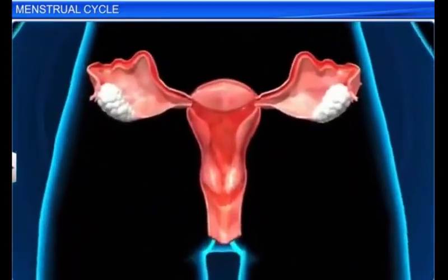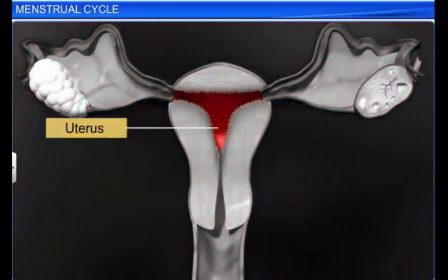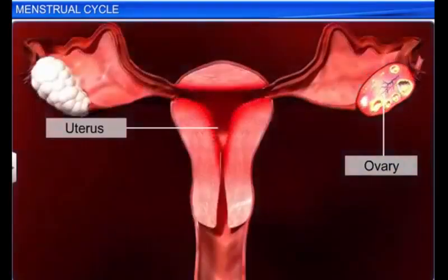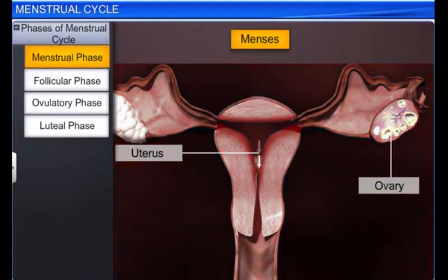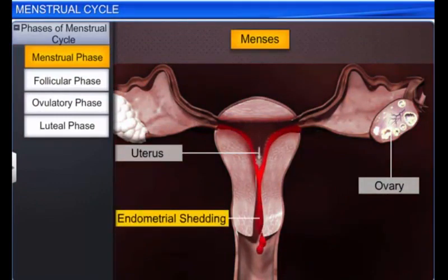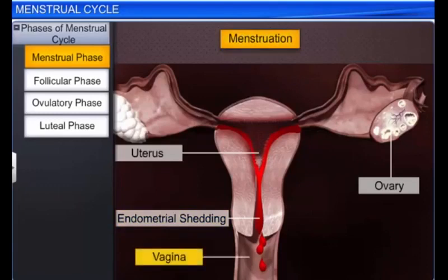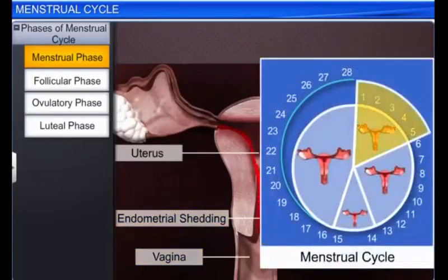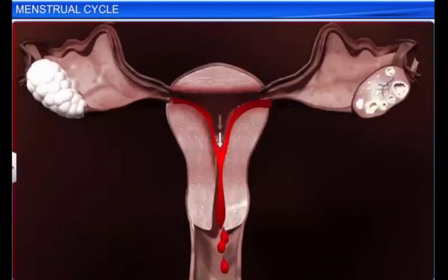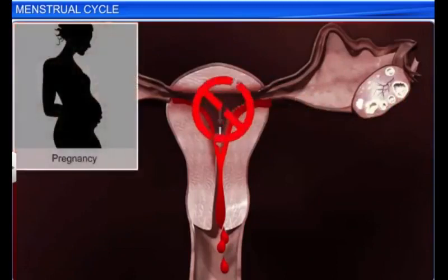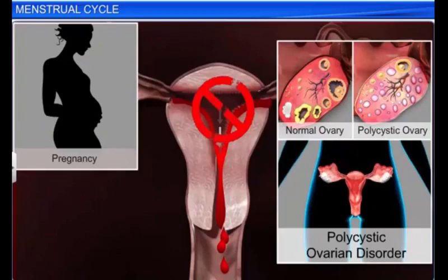Each phase of the menstrual cycle is marked by simultaneous changes in the uterus, ovary, and hormone secretion. During the menstrual phase, the endometrial lining and its blood vessels break down and mix with blood, mucus, and other cell debris to form menses, discharged through the vagina as menstrual flow lasting three to five days. The absence of menstruation may indicate pregnancy or ovarian disorders such as polycystic ovarian disorder, or factors such as stress and ill health.